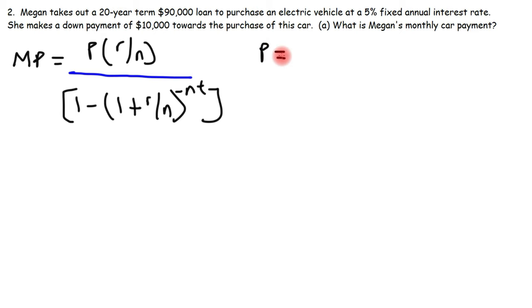So let's write down what we know. What's the value of P in this problem? P is the principal. Now she took a $90,000 loan but she made a down payment of $10,000, so when the process begins, the balance of her loan is going to be $80,000. It's 90,000 minus 10,000, so she's going to start with a principal balance of $80,000. r, the annual interest rate, is 5%. Now we need to convert this value to a decimal, so 5 divided by 100 is 0.05.